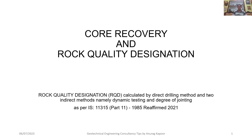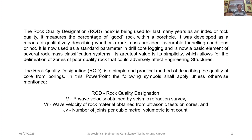As per Indian Standard code IS 11315 Part 11 1985, reaffirmed 2021, the Rock Quality Designation RQD index has been used for many years as an index of rock quality. It measures the percentage of good rock within a borehole. It was developed as a means of qualitatively describing whether a rock mass provided favorable tunneling conditions or not. It is now used as a standard parameter in drill core logging and is a basic element of several rock mass classification systems. Its greatest value is its simplicity, allowing delineation of zones of poor quality rock from good quality rock that could adversely affect engineering structures.